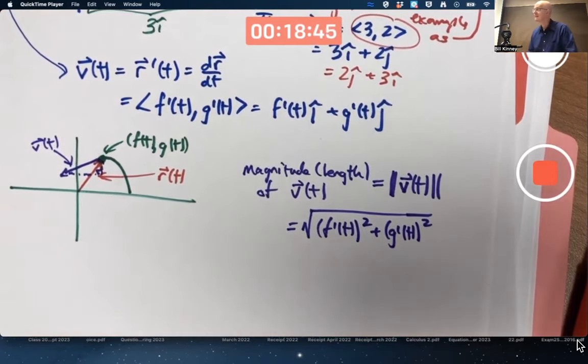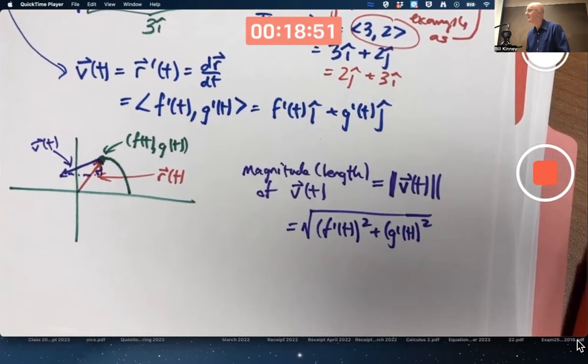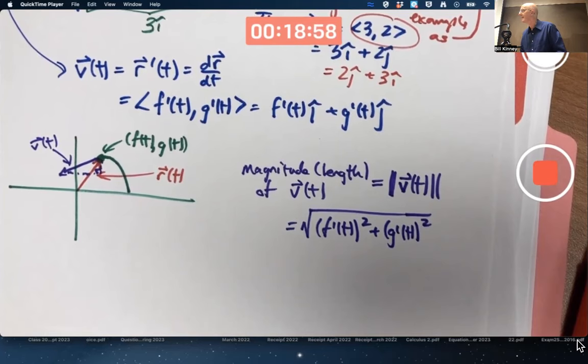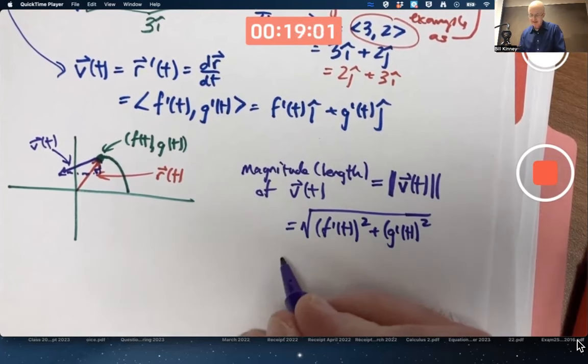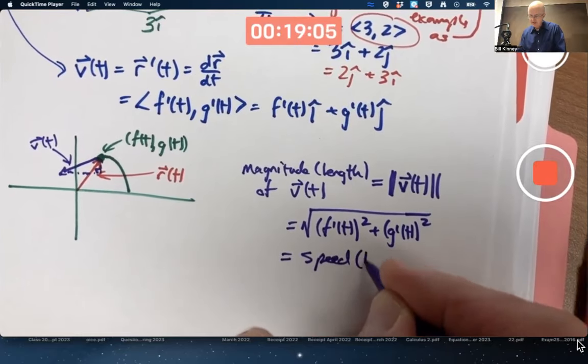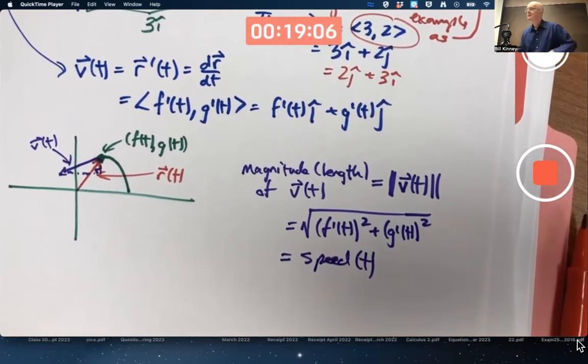Essentially that's the Pythagorean theorem giving you this length. And the other important thing about this is this quantity is therefore the speed. The speed is the magnitude of the velocity. That's essentially a definition. This is the speed as a function of t. It's not a constant speed in general.